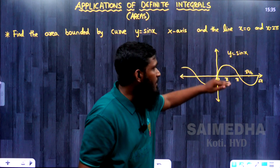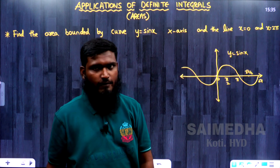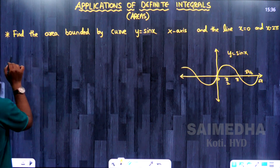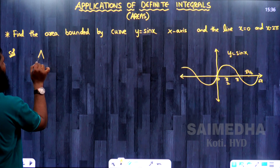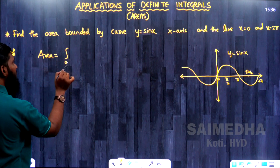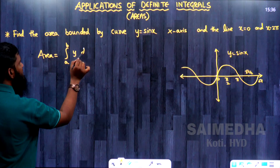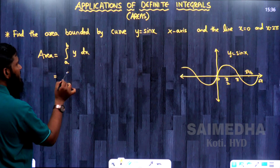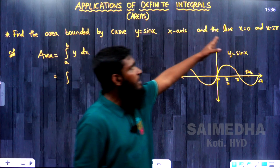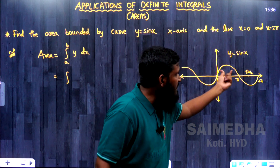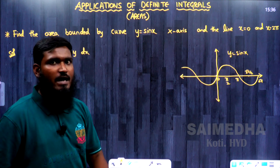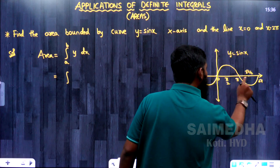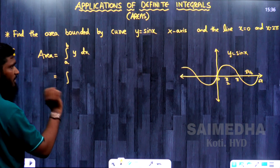One important point: whenever the region is above the x-axis, we consider it positive, and whenever it is below the x-axis, we consider it negative. The area formula is: Area = integral from a to b of y dx. Here a = 0 and b = 2π. But since we have regions both above and below the x-axis, we cannot directly integrate 0 to 2π. So we split: 0 to π is positive, and π to 2π is negative.